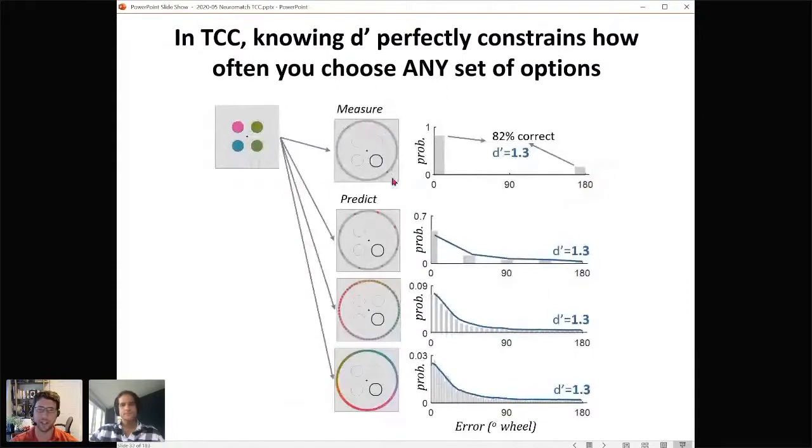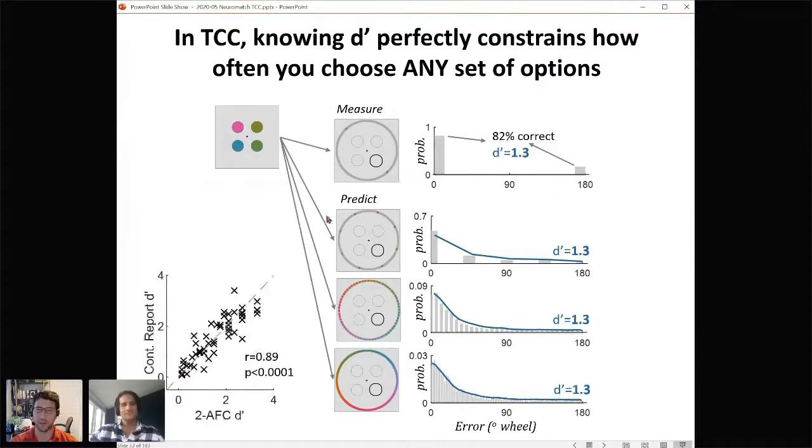If you do 2 AFC, just which of these two colors was it, and calculate d prime, you can just plug that into this model and exactly predict what errors will look like for an 8 alternative forced choice or even for a complete continuous report distribution. This is a zero free parameter fit to this based only on how well people can do 2 AFC here, and that works even at an individual subject level.